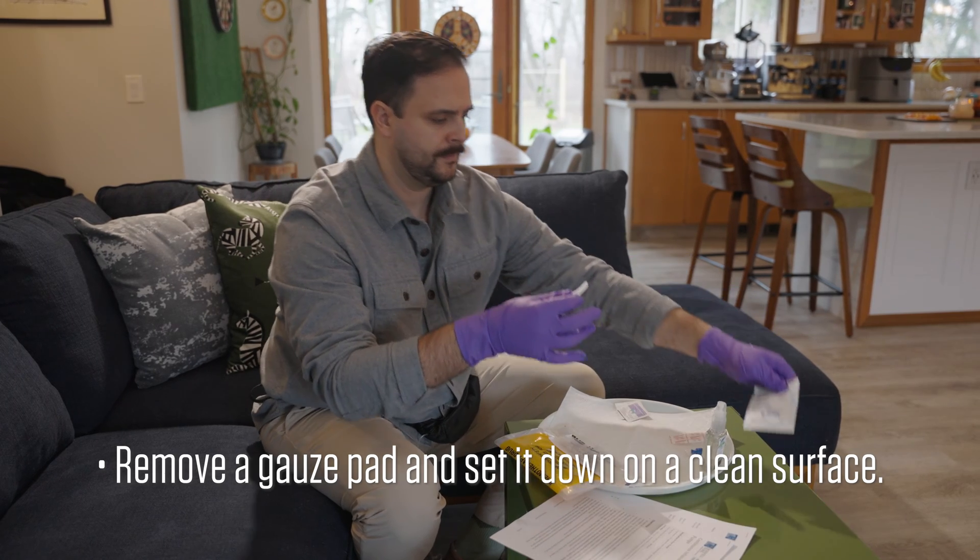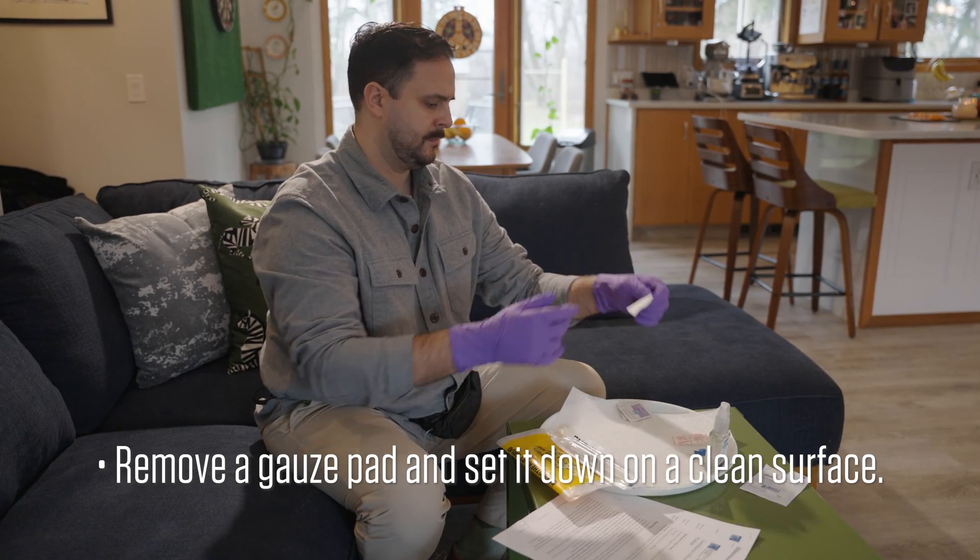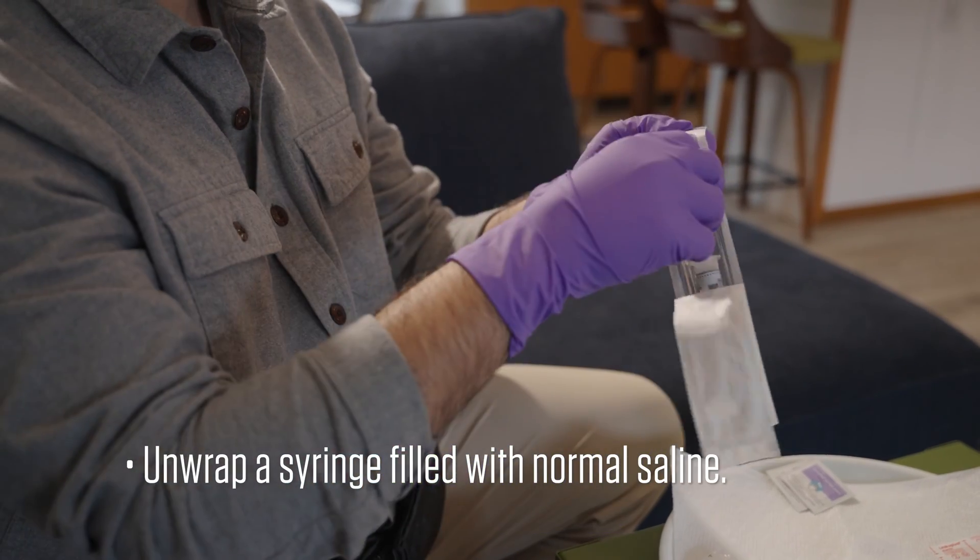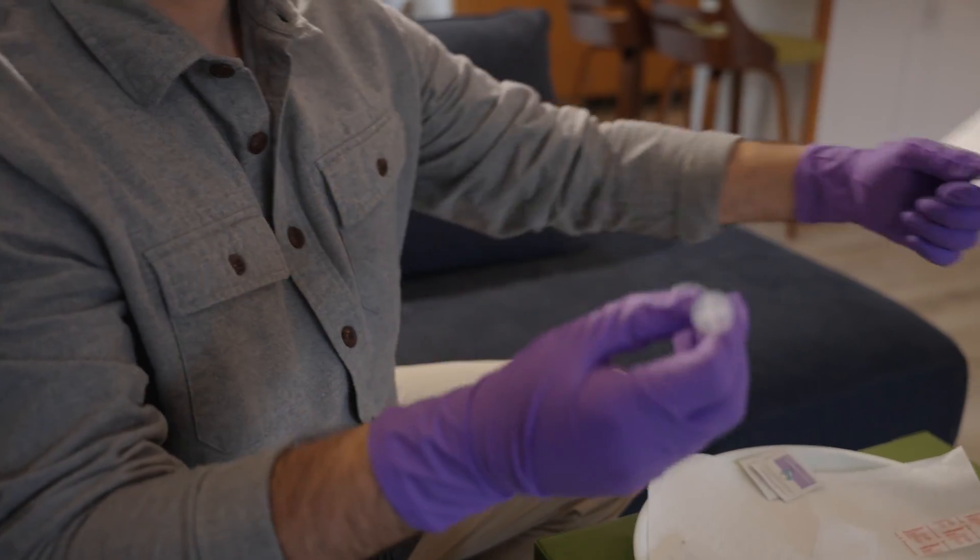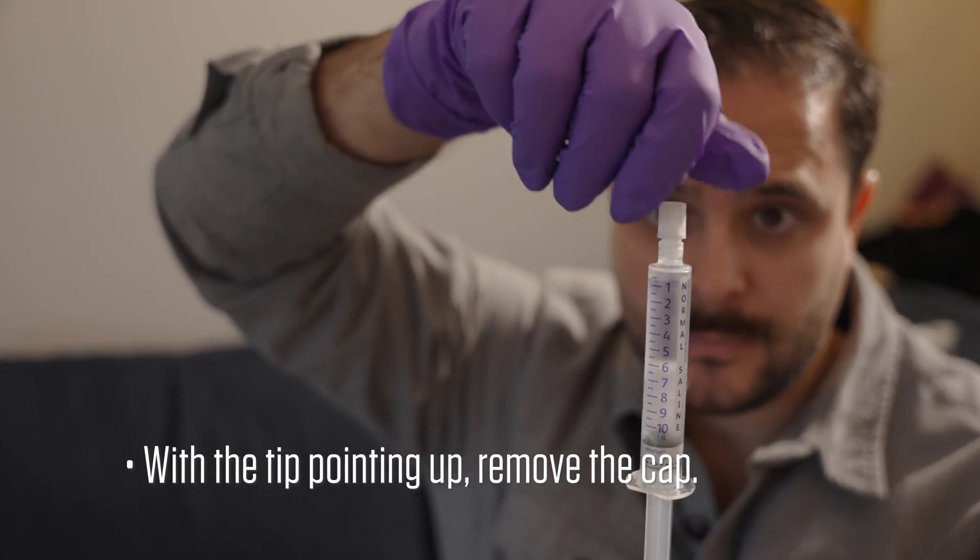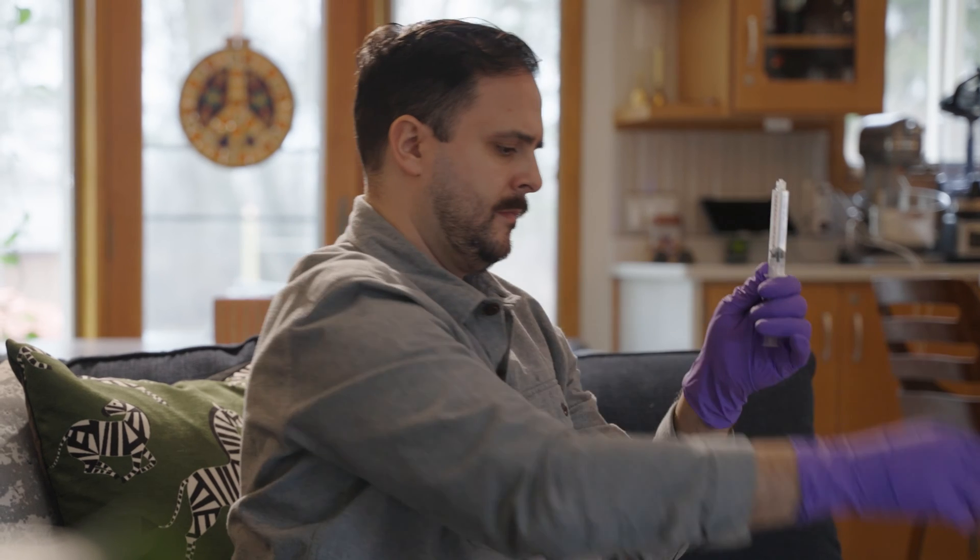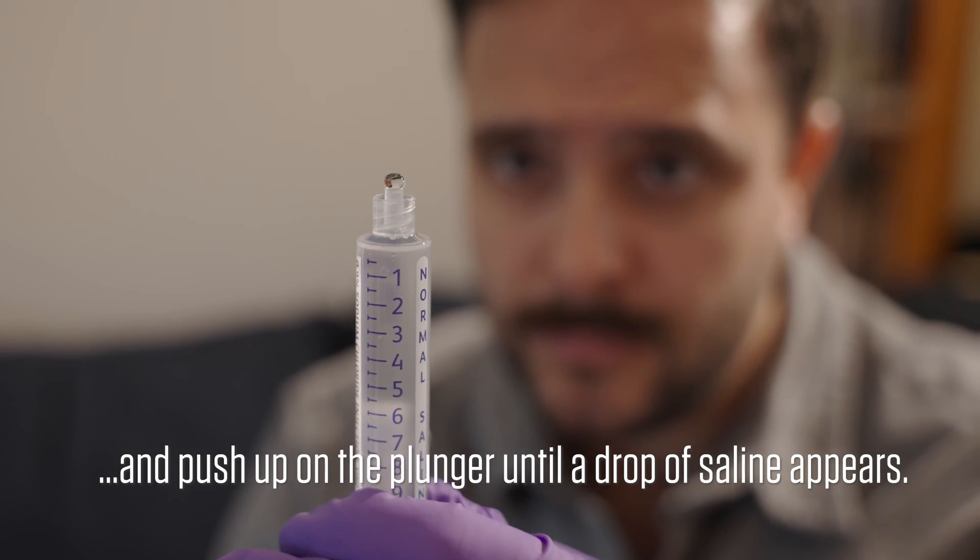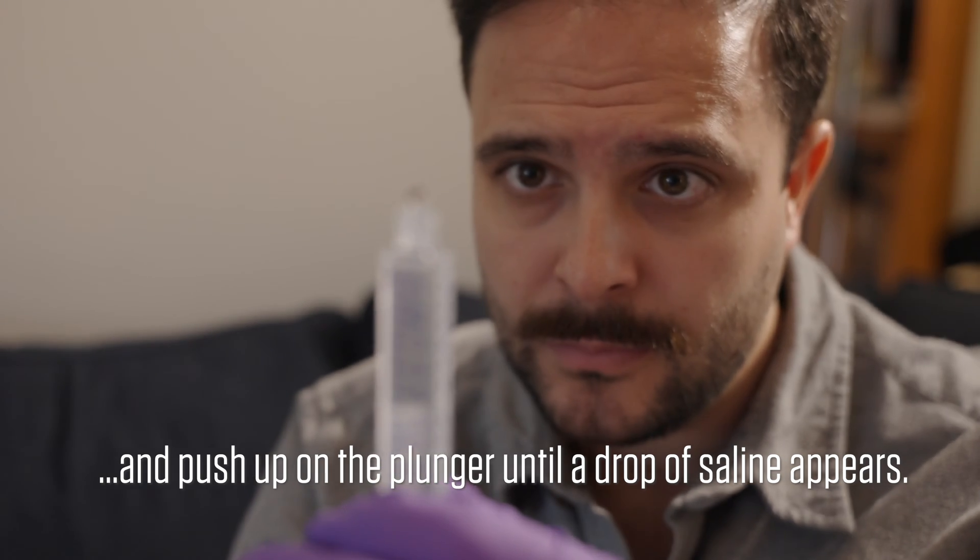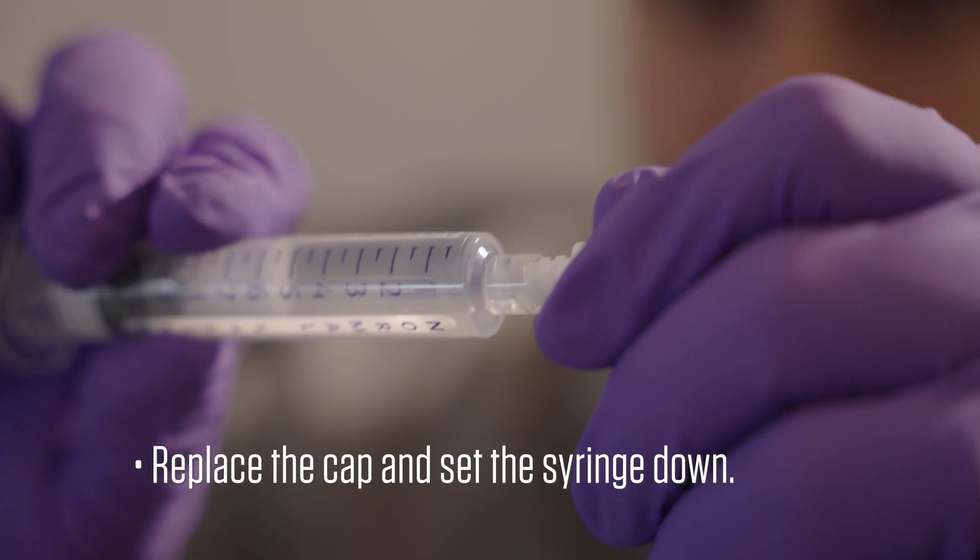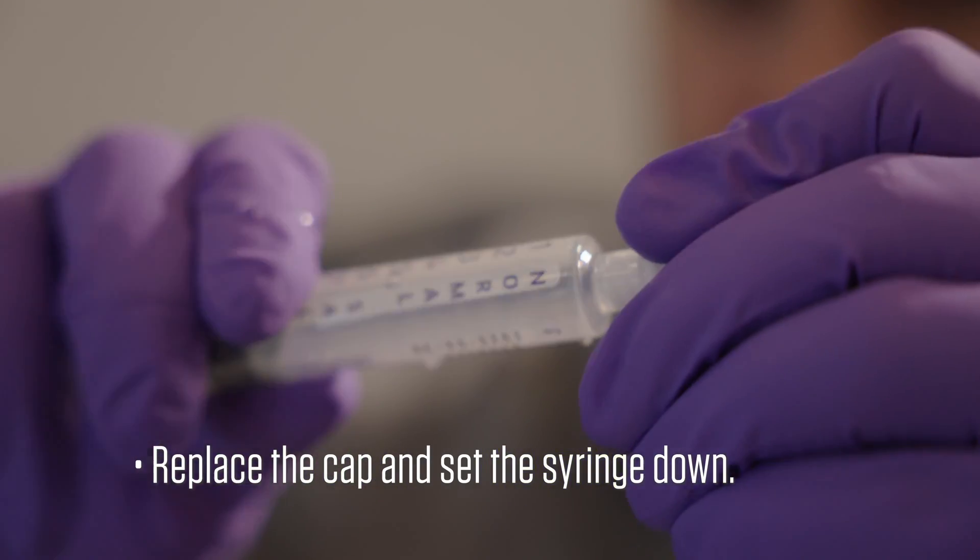Remove a gauze pad and set it down on a clean surface. Unwrap a syringe filled with normal saline. With the tip pointing up, remove the cap and push up on the plunger until a drop of saline appears. Replace the cap and set the syringe down.